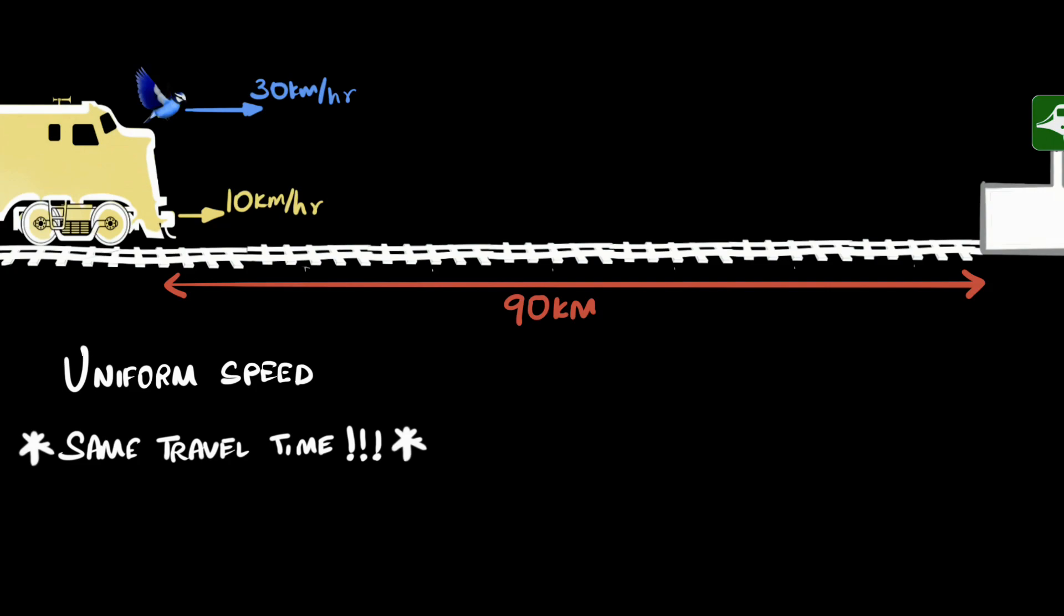Here's a clue. We know that the bird is traveling thrice as fast as the train. So can you from that think about some connection between the distance traveled by the bird and the distance traveled by the train?